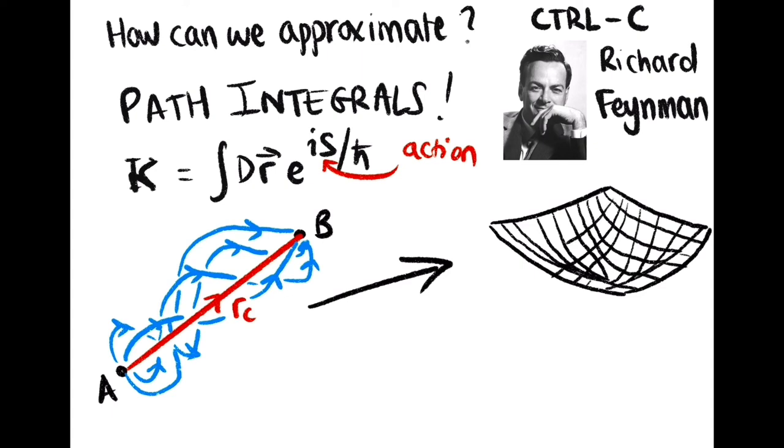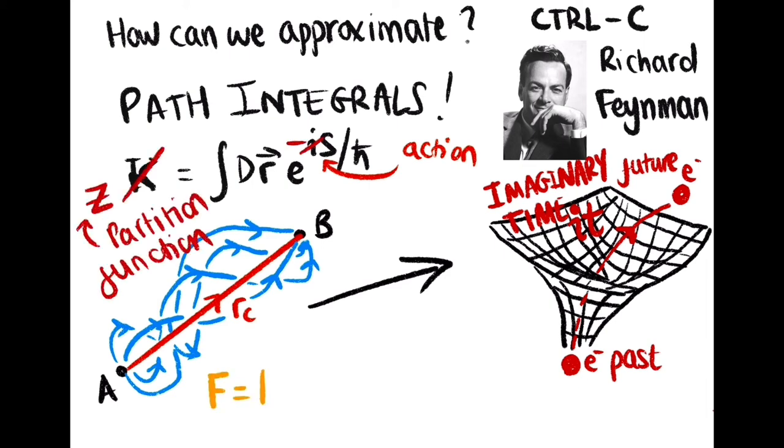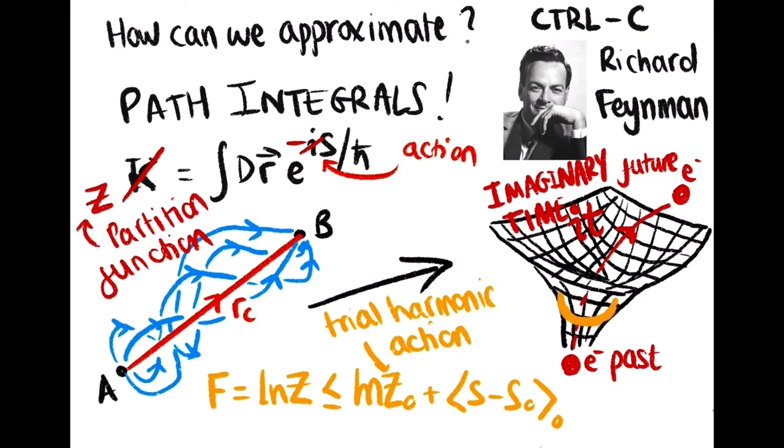This potential looks like an attractive Coulomb potential between the electron and itself at an earlier time. The caveat is that we are now working in imaginary time, which replaces troublesome oscillations with exponential decays and swaps quantum physics for statistical physics. From this, we can get a variational principle that gives an upper bound to the free energy of the polaron by swapping out the effective Coulomb potential for an effective harmonic potential.